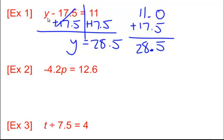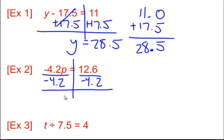And you can go ahead and check your answer by plugging it in for y. Number two. Here we have negative 4.2p equals 12.6. This is multiplication. So we need to do the inverse operation, which is division, divide by negative 4.2 on both sides. Remember, equations, you have to do the same thing on each side of the equal sign. So I'm just left with p.